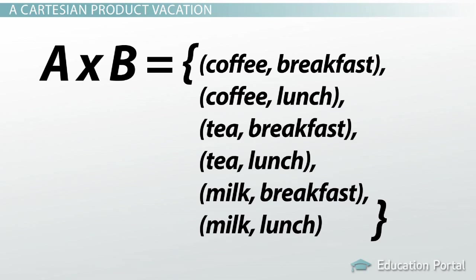The Cartesian product is always written like an ordered pair. Parentheses, first element, comma, second element, and parentheses.